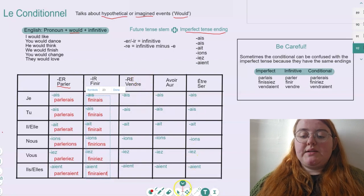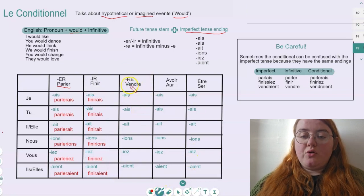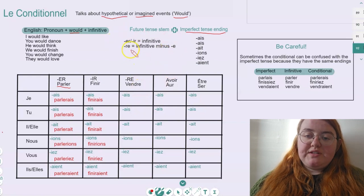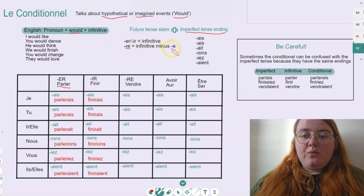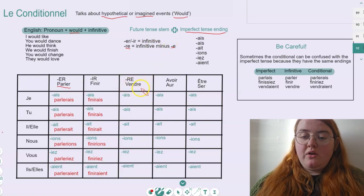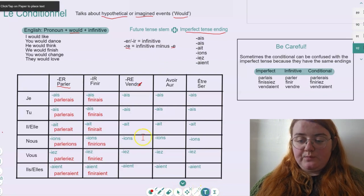Then we come to our RE verbs. Our example here is vendre, 'to sell'. Now, if we have a look at our future tense stem, when we have an RE verb, we want to use the infinitive but also get rid of the final E. So we want to minus that final E. For our example here, vendre is our infinitive, and then to get rid of this last E, we get our stem, which is vendr, just without the E on the end.